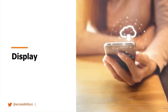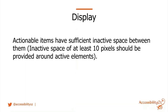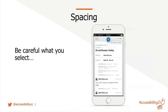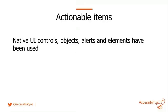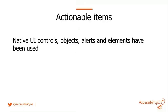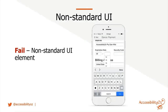Regarding display: actionable items need sufficient inactive space between them — at least 10 pixels around active elements. An example shows edit and mark complete right next to each other, making it easy to accidentally complete instead of edit. Also, native UI controls, objects, alerts, and elements must be used — absolutely essential for native apps because native controls have built-in accessibility. Without this, you end up with things like an expiration date field acting as a text field with a dropdown showing 14, 15, 16, 17, instead of just being a select box.